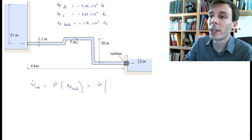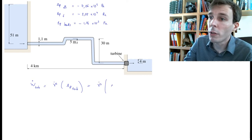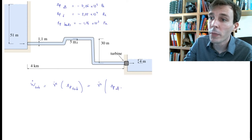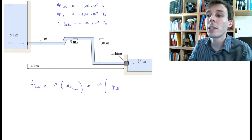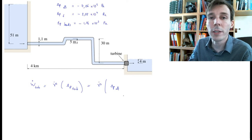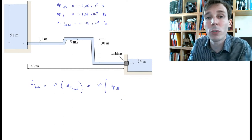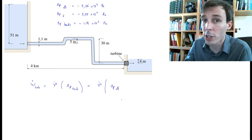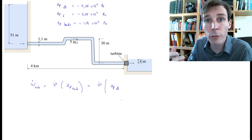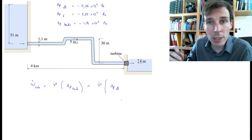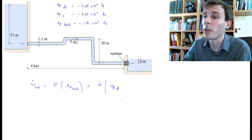First the delta P due to altitude. If I close this parenthesis, I would get the power that would be available to the turbine if there were no friction in the pipe. But fortunately, friction in the pipe subtracts from this delta P available here.